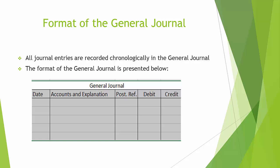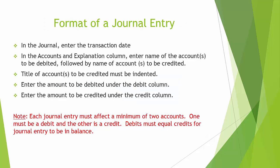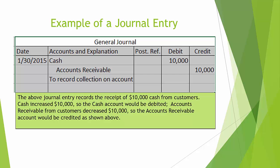Here's the format of the general journal. Journal entries are recorded chronologically — meaning in date order — in the general journal. As you can see, there's a date column, an accounts and explanation column, a posting reference column, and a debit and credit column. In the journal, enter the transaction date. In the accounts and explanation column, enter the name of the account or accounts to be debited first, followed by the name of the account or accounts to be credited. The title of accounts to be credited must be indented. Enter the amount to be debited under the debit column and the amount to be credited under the credit column. Note that each journal entry must affect a minimum of two accounts — one must be a debit and the other a credit. Debits must equal credits for a journal entry to be in balance.